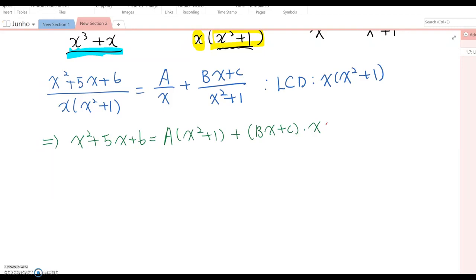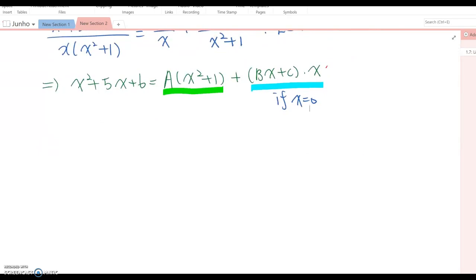Even though this term, we cannot find any value where x equal to 0, this term, yes we can. So in this case, if x equal to 0, then there will be 0. So let x equal to 0. Then this becomes 6 equal to A times 1 plus 0. Therefore, we found A equal to 6.